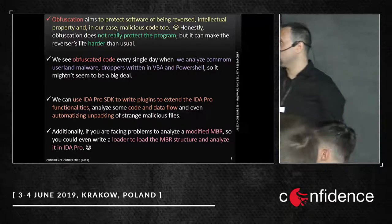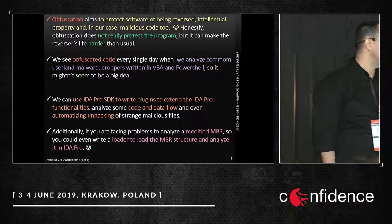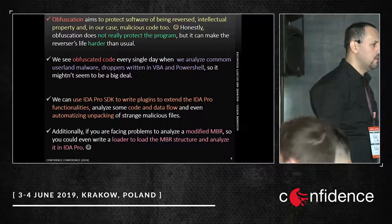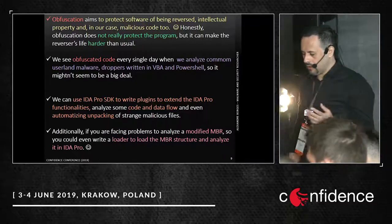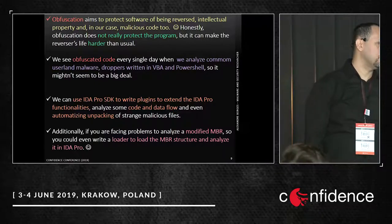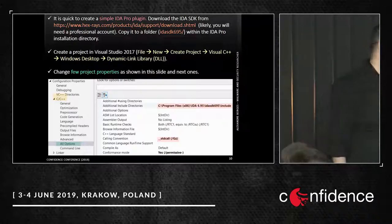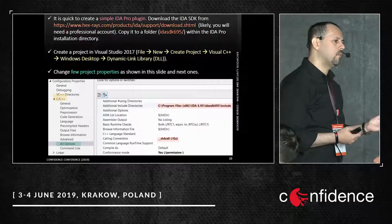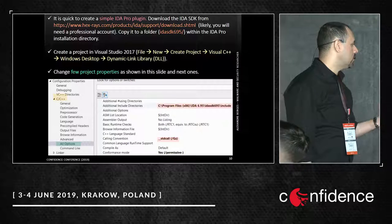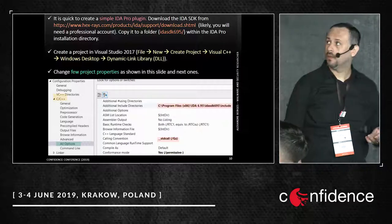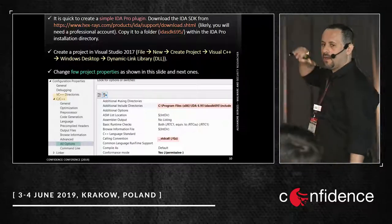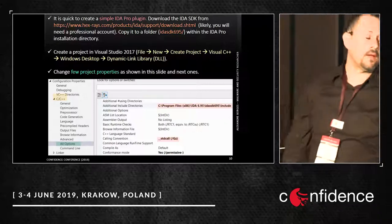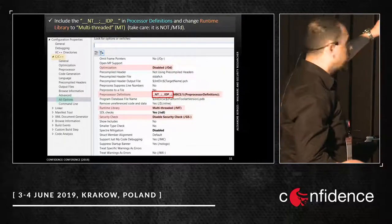We can even write, for example, a simple loader to load a new binary — in this case, easy MBR. It's pretty easy to do that. Eventually, if you don't know how to write a simple IDA Pro plugin, I left you here some step-by-step instructions. I show you here how to set up your environment to write some plugins for IDA Pro using Visual Studio 2017, step by step, to help you to write some plugins.